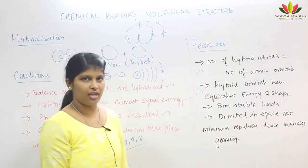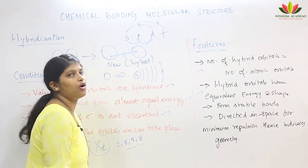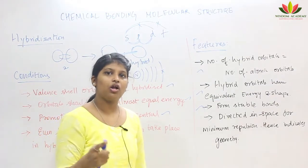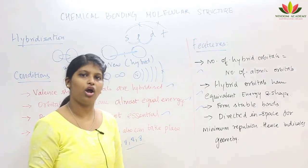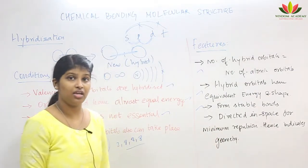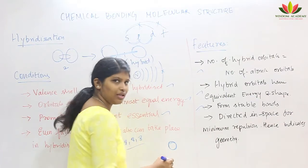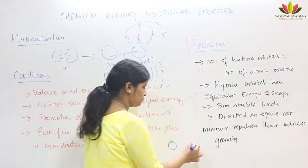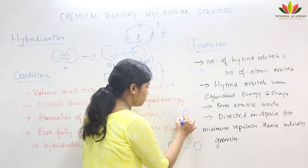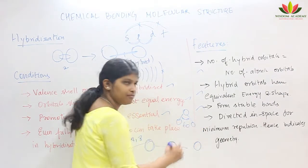Third feature: hybrid orbitals form a more stable bond compared to atomic orbitals — that is why atoms form molecules. Fourth feature: hybrid orbitals are directed in space for minimum repulsion. For example, an atom forming bonds can have a 60-degree angle or a 180-degree angle. The greater angle means the bonding atoms are farther apart from each other.